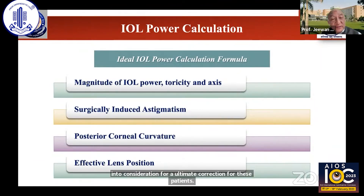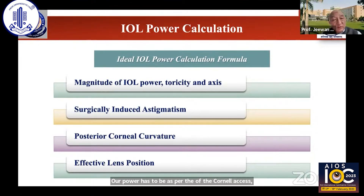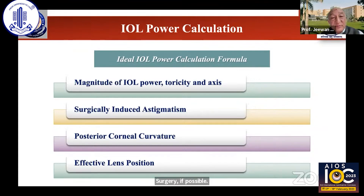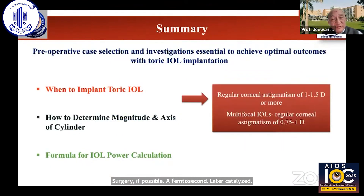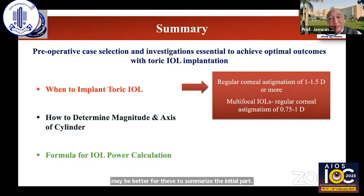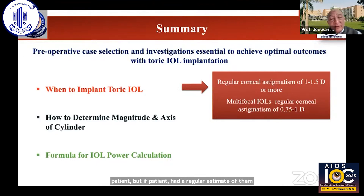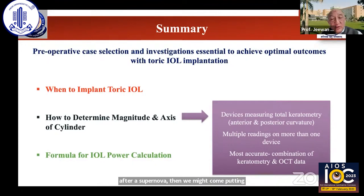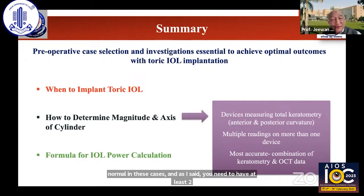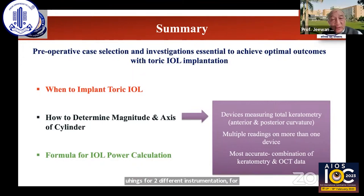IOL power has to be as per the toricity of the corneal axis. Always look for surgically-induced astigmatism. Especially in a post-keratoplasty patient, you may have a significant change in corneal parameters. If you have a larger surgical incision in these cases, we should do a small incision surgery. If possible, a femtosecond laser cataract surgery may be better for these patients. To summarize the initial part, I think we require the cornea to be stable to have a regular astigmatism. Multifocal IOLs may not be suitable for a post-keratoplasty patient, but if the patient has regular astigmatism after suture removal, then we might consider putting a multifocal IOL also, in case the posterior segment is normal. You need to have at least two readings from two different instrumentations for keratometric power. If needed, we should use topography or tomography to get good readings for these patients.